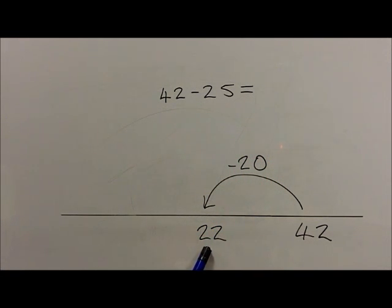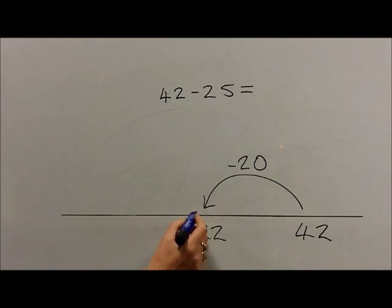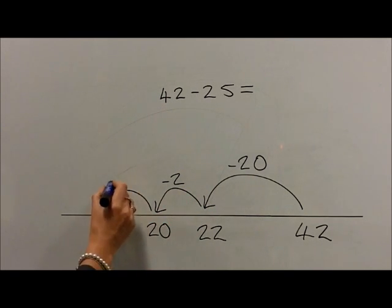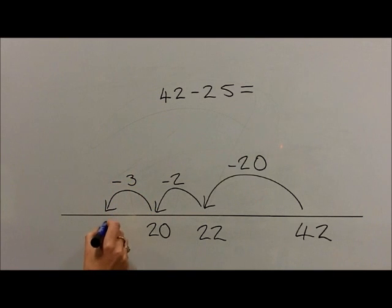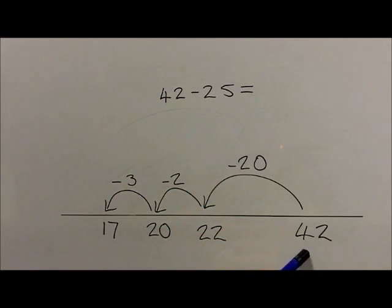Because they are now at 22, the further subtraction of 5 can be broken down into subtracting 2 to reach 20. So the question 42 take 25, they get to 17.